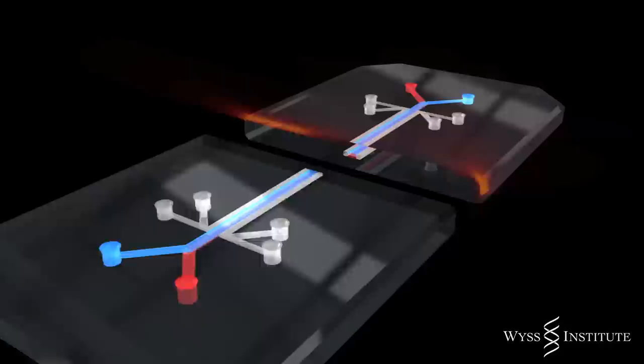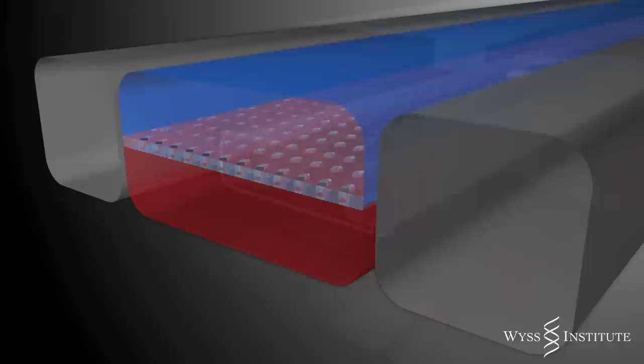The lung on a chip is crystal clear, flexible, and about the size of a small computer memory stick, but it contains tiny hollow channels created using microchip fabrication techniques.